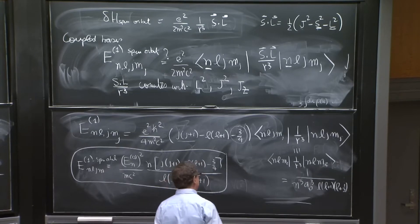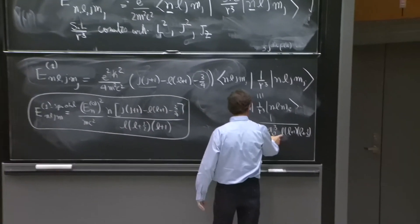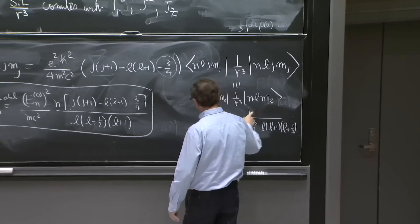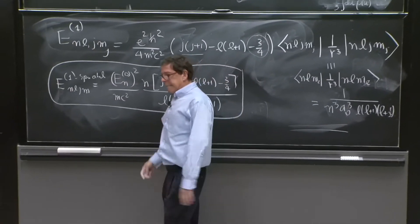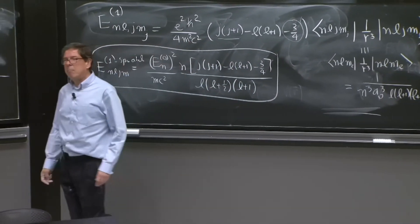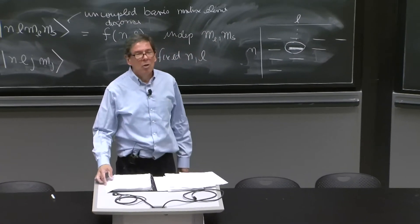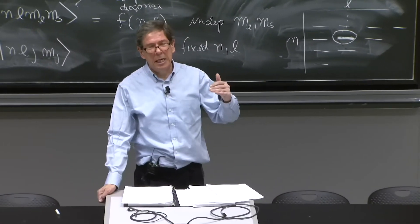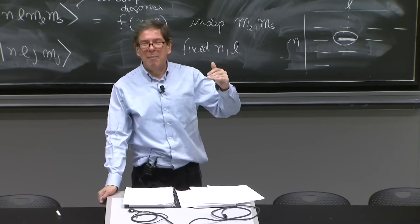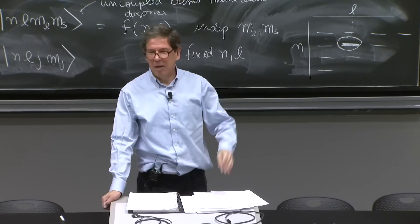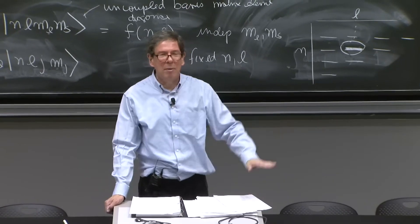And the 1 over r cubed has l dependencies here. So it's 0 in the denominator, 0 in the numerator. The whole spin orbit coupling doesn't seem to make sense for l equals 0. So most people say, physically, the spin orbit coupling vanishes for l equals 0. It should not be there.